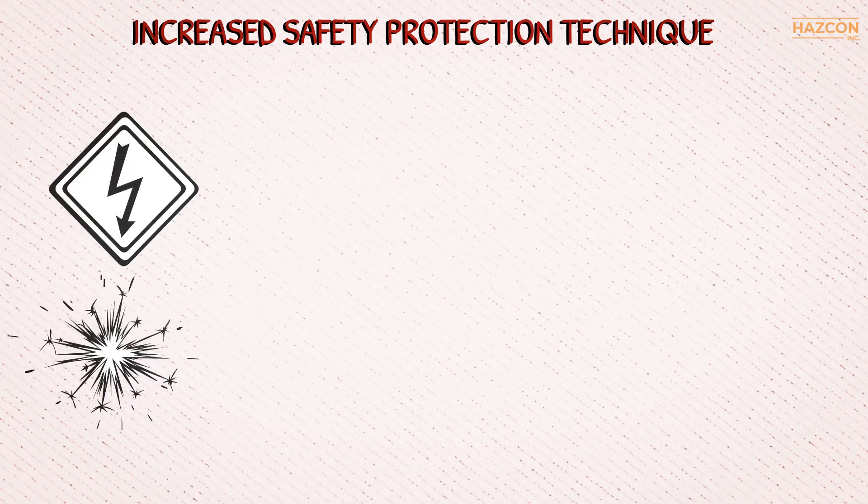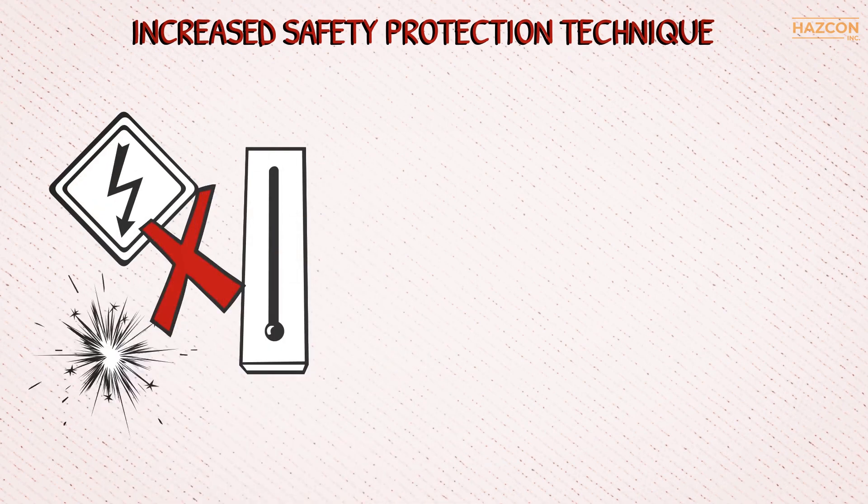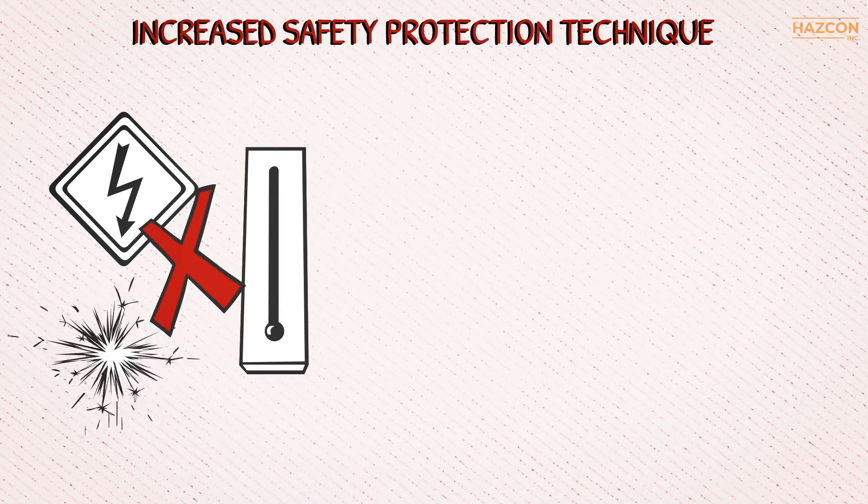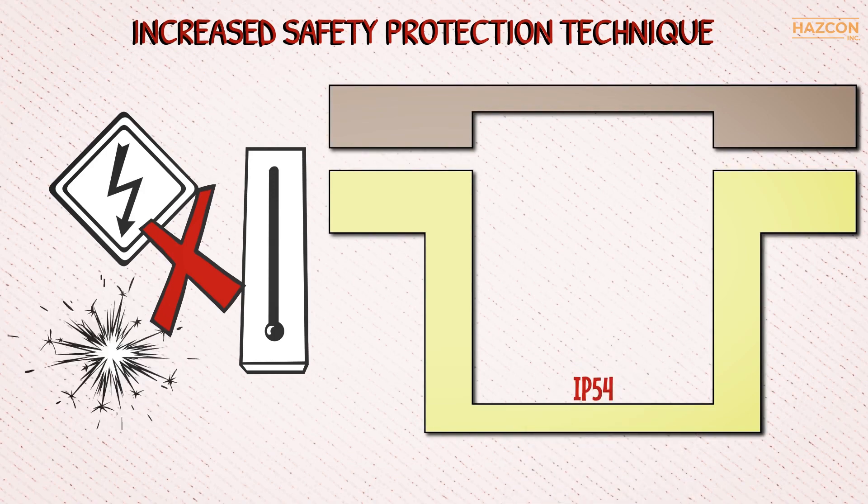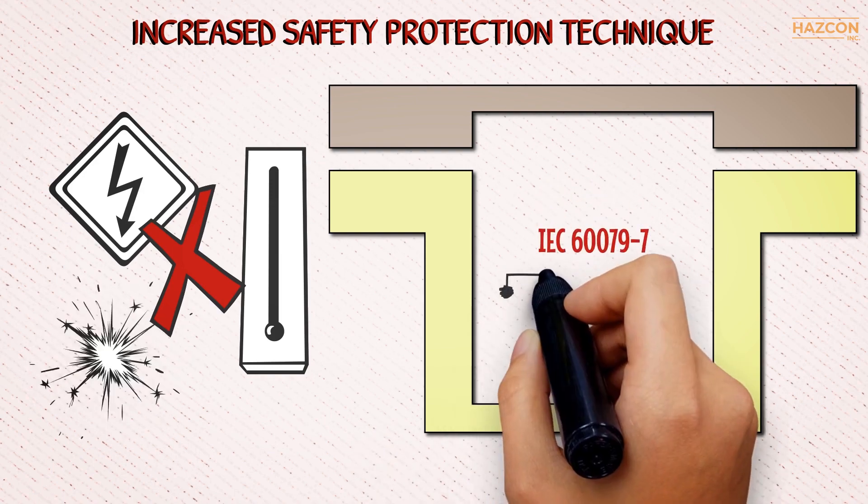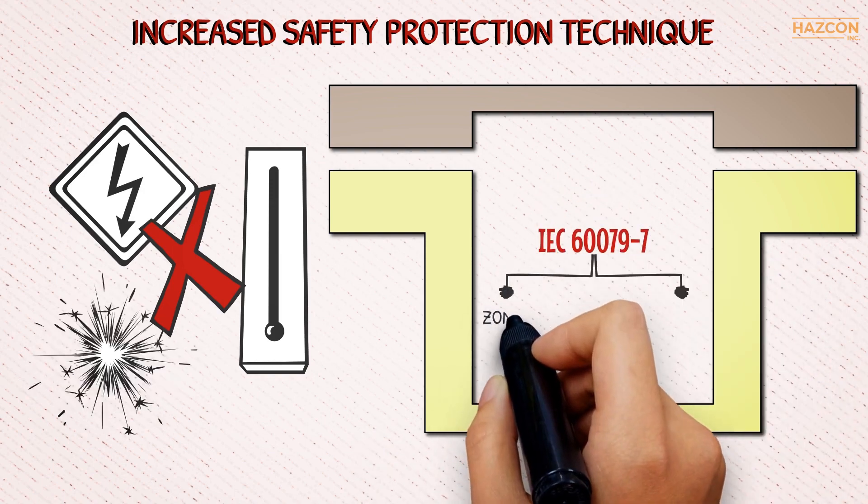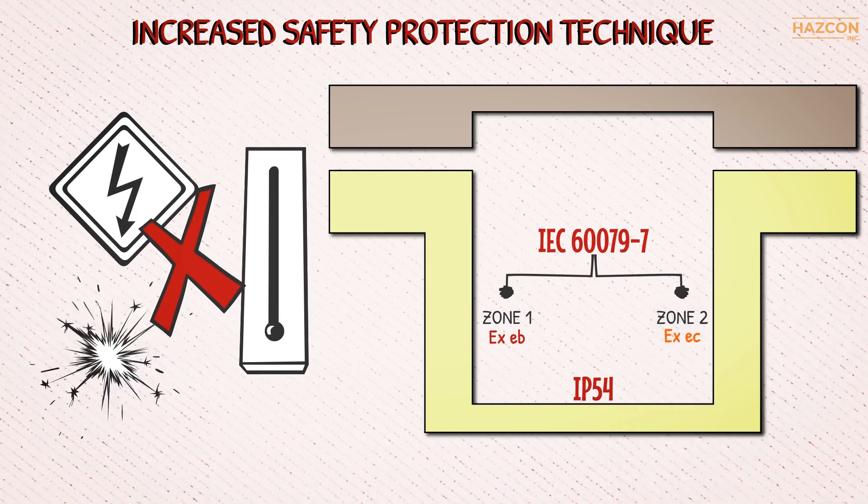In summary, the increased safety protection technique relies on the fact that no arcs, sparks, or hot surfaces can be present under normal conditions for Ex ec and under fault conditions for Ex eb. There must be an enclosure which must be able to provide IP54 protection for internal components. Products must comply with IEC 60079-7 in order to use the increased safety protection technique for Zone 1 and 2.